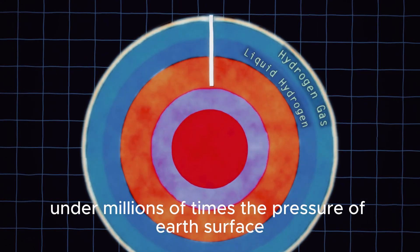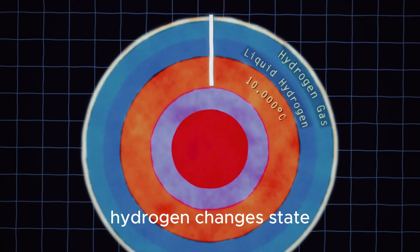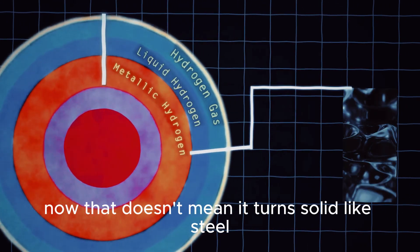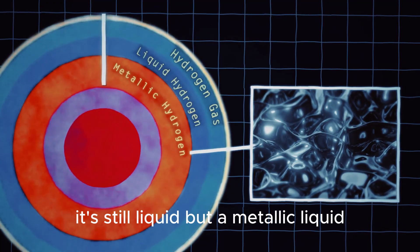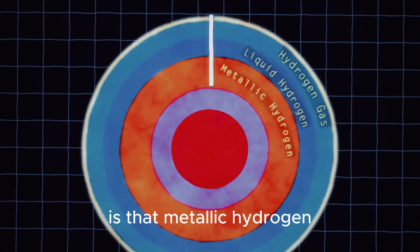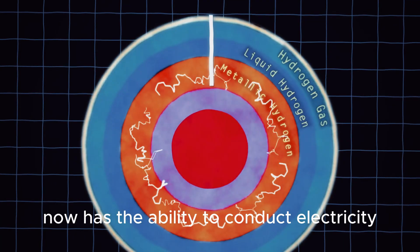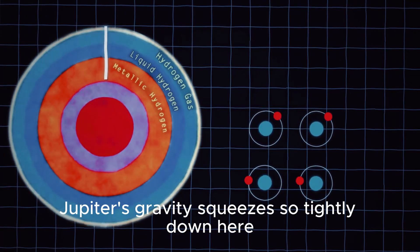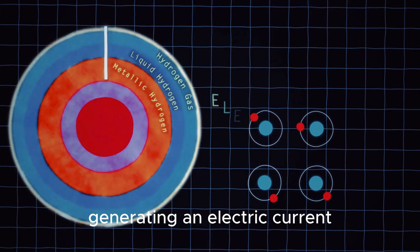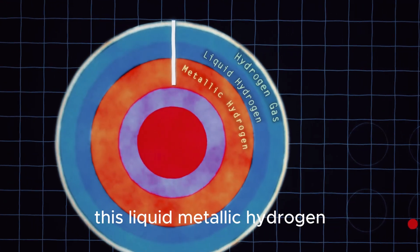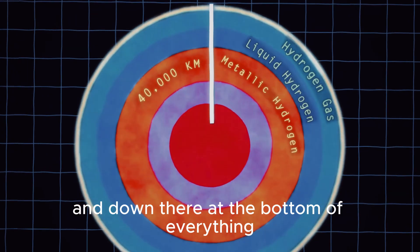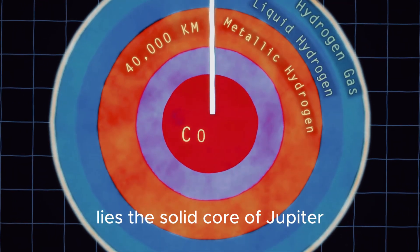Under millions of times the pressure of Earth's surface, at 10,000 degrees Celsius, hydrogen changes state into something called metallic hydrogen. Now, that doesn't mean it turns solid like steel. It's still liquid, but a metallic liquid, maybe something like the mercury inside a thermometer. The biggest change that takes place here is that metallic hydrogen now has the ability to conduct electricity. Jupiter's gravity squeezes so tightly down here that electrons break free from the hydrogen atoms and flow freely throughout the liquid, generating an electric current. This liquid, metallic hydrogen makes up the majority of the planet's interior. It's about 40,000 kilometers deep, and down there, at the bottom of everything, lies the solid core of Jupiter.